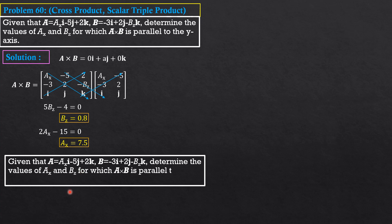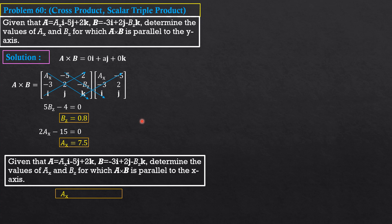For your part: given the same vectors A = Ax·I − 5J + 2K and B = −3I + 2J − Bz·K, determine the values of Ax and Bz for which A cross B is parallel to the X-axis. The answers will be the same.